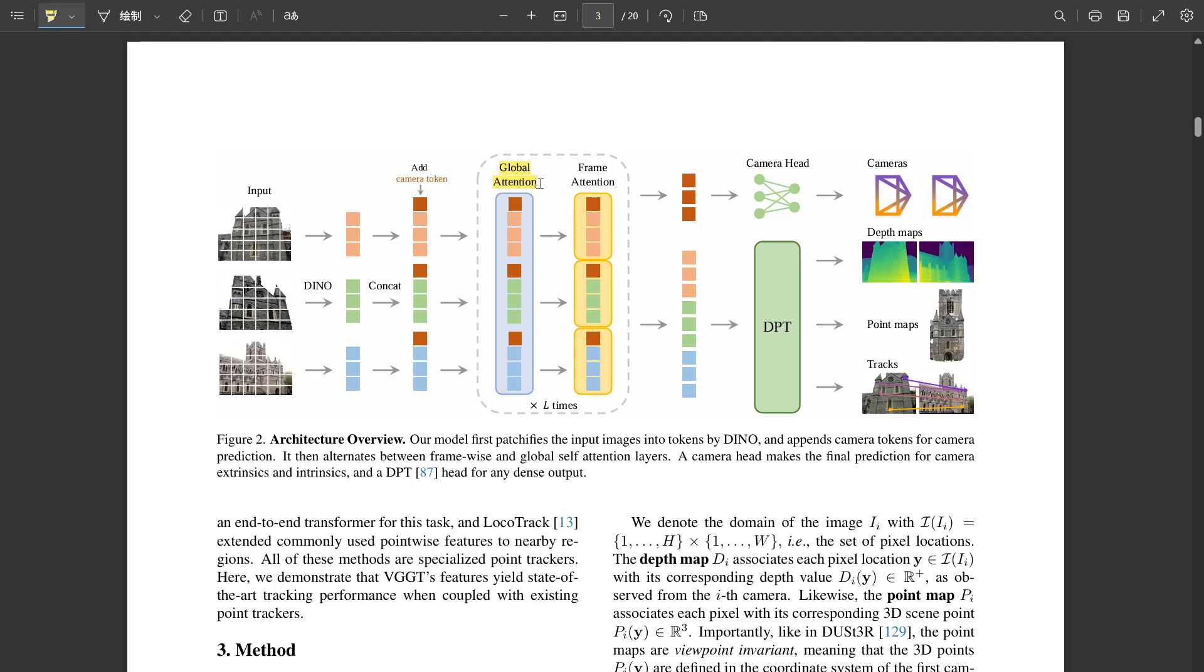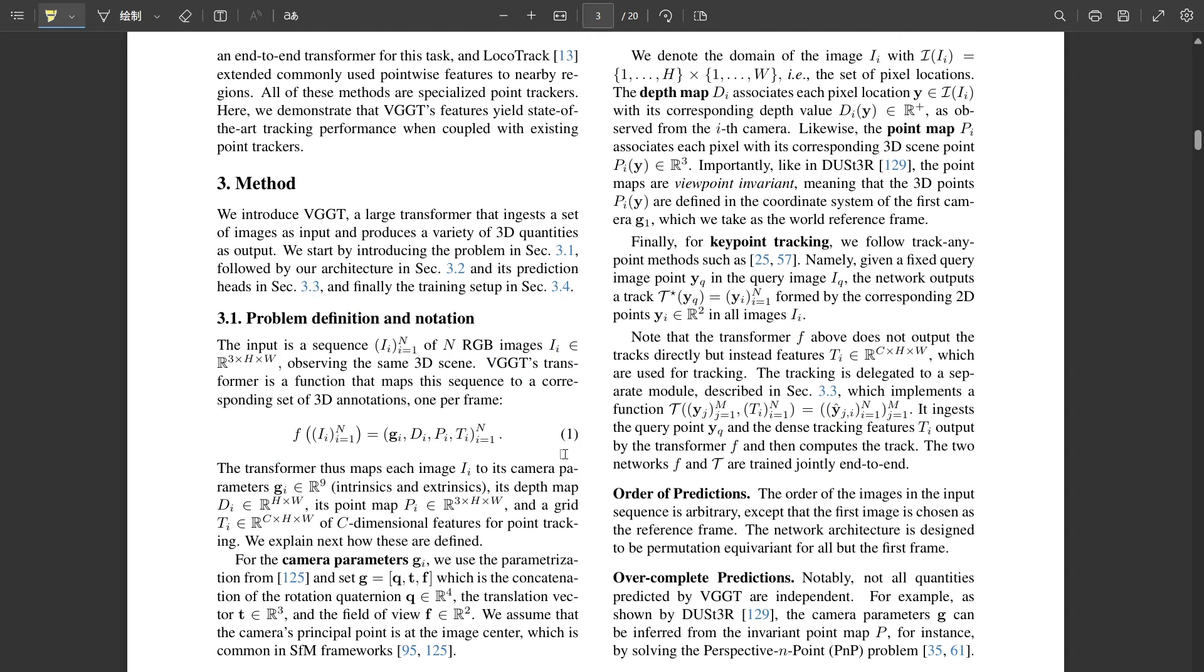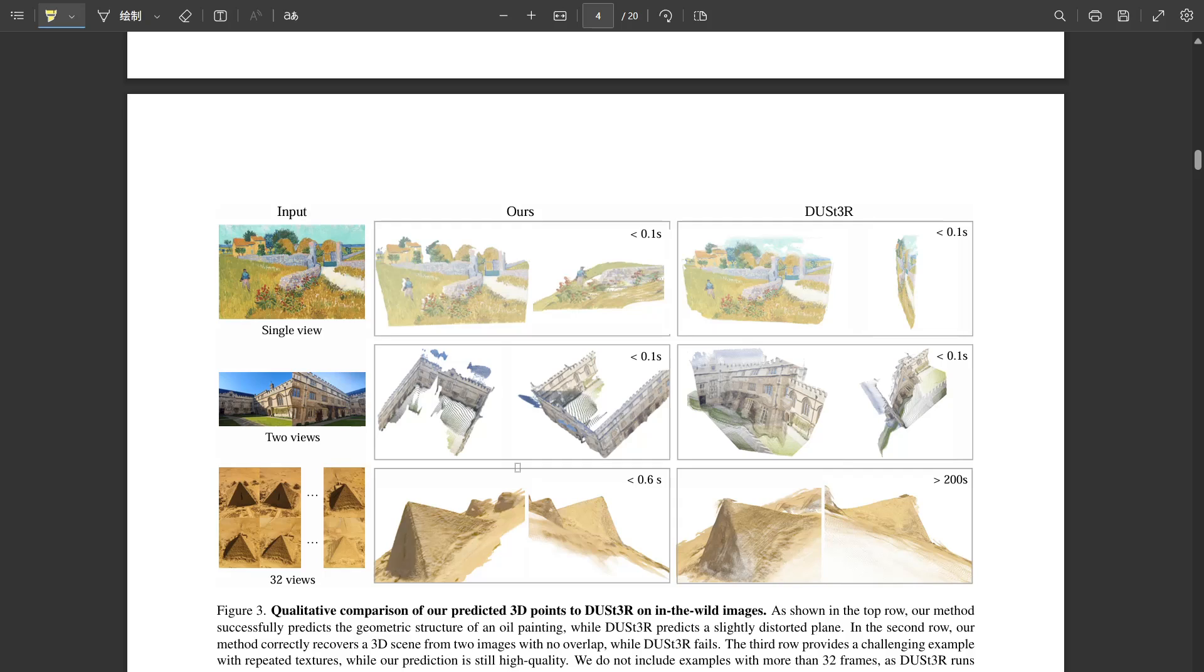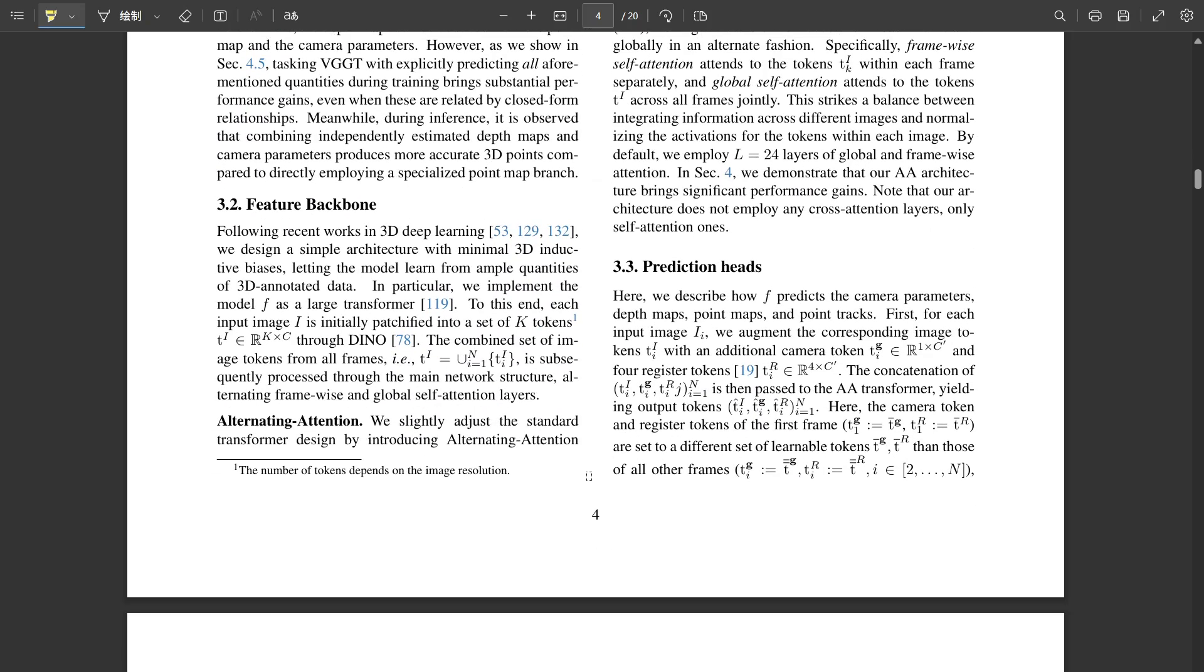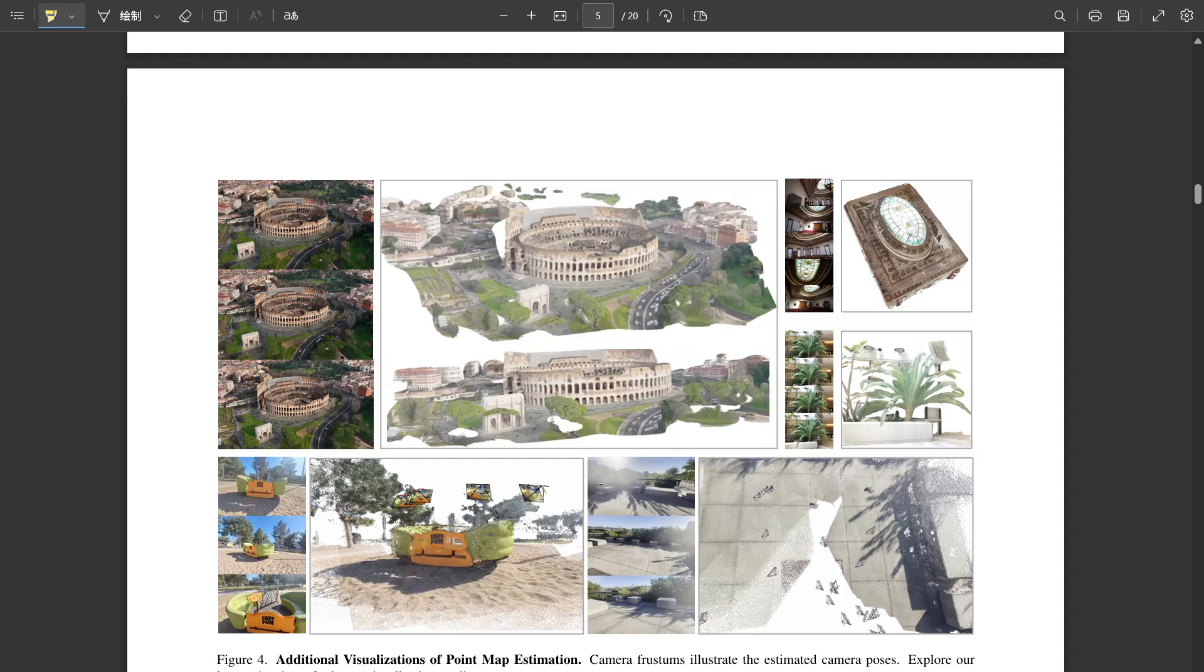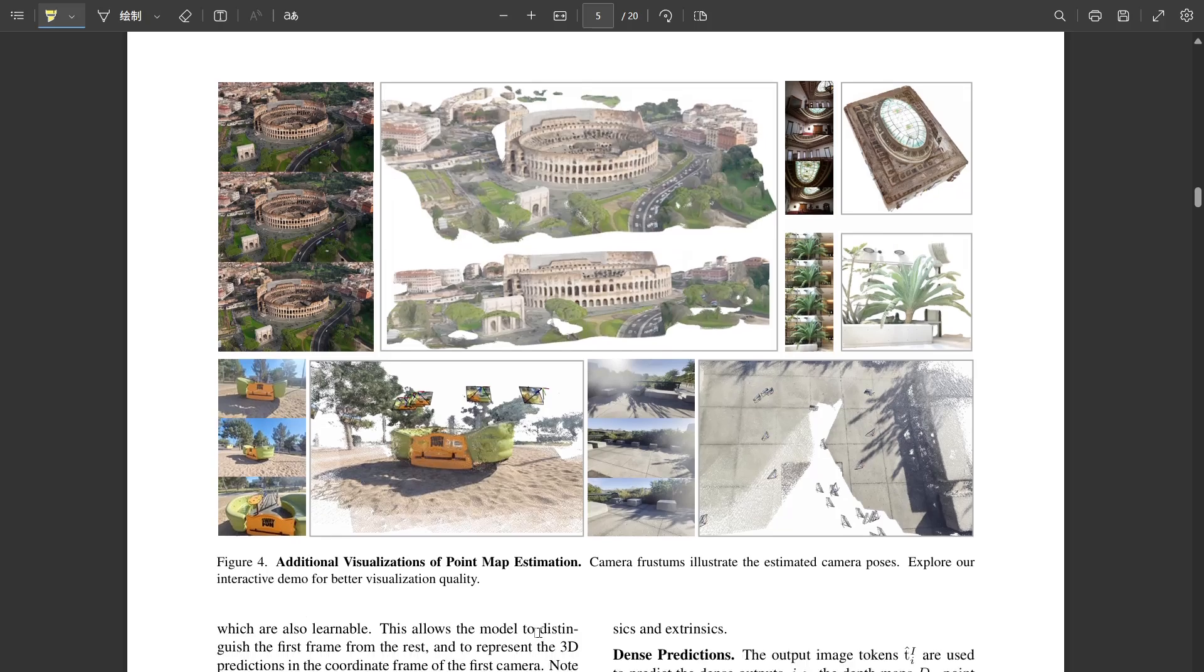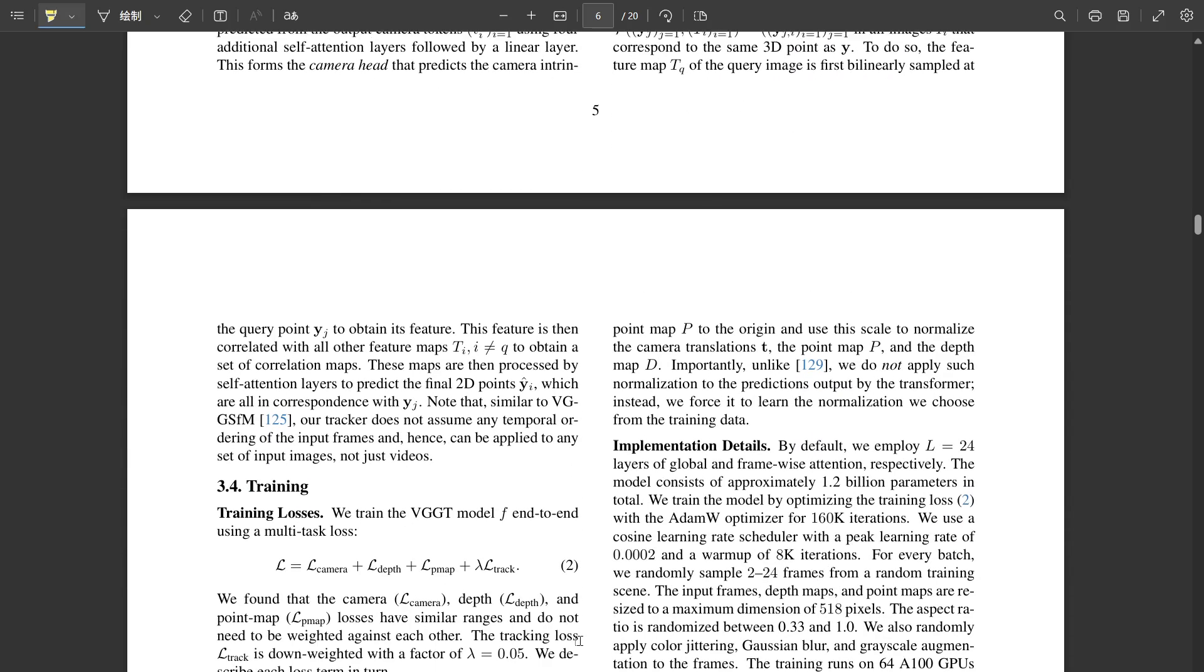And there was another interesting detail about the point maps. Oh right, they found that even though the network can predict the point map directly, sometimes they got slightly better results during inference by taking the network's predicted camera poses and predicted depth maps and then calculating the 3D point map using the standard geometric projection formula. So using the network's outputs but doing that final geometric step yourself could be more accurate than trusting the network's direct 3D point prediction sometimes? Yes, it's an empirical finding, suggesting maybe the factorization into camera and depth is slightly easier for the network to predict perfectly, even with the multitask setup. Okay, fascinating detail.